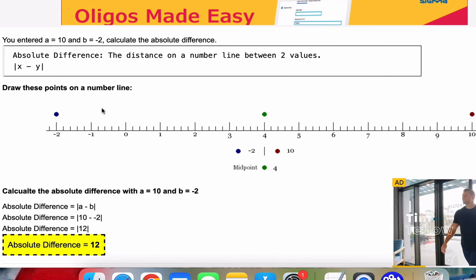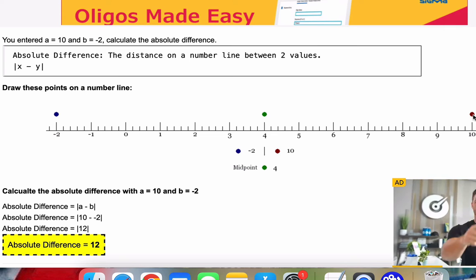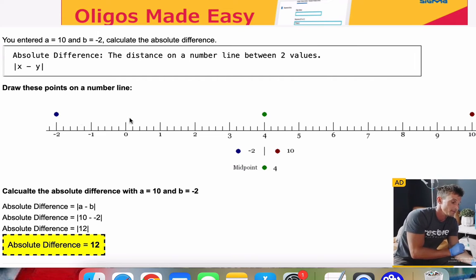So we draw these points on a number line. Here's negative 2, and this is 10. And we want to calculate this difference here.